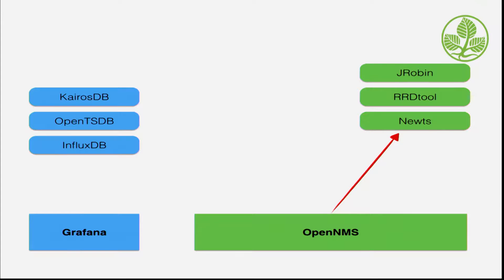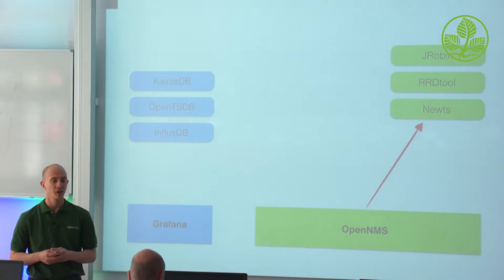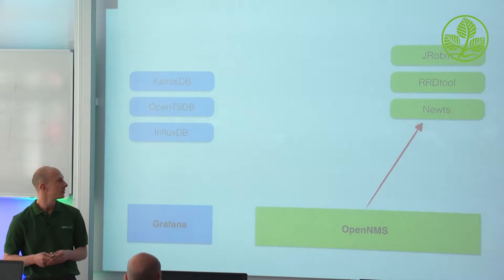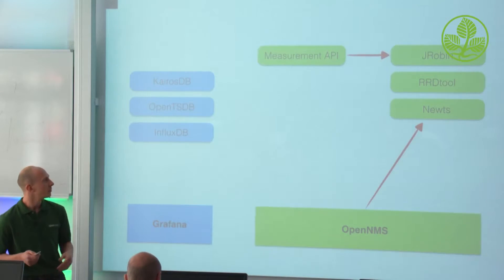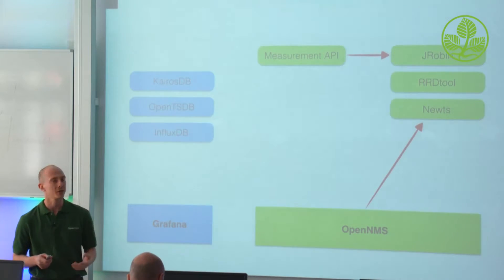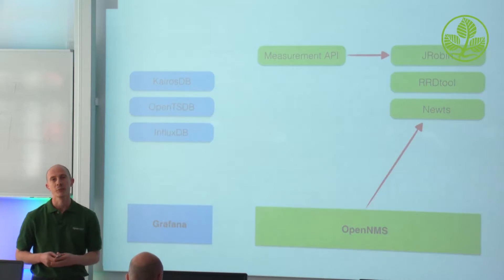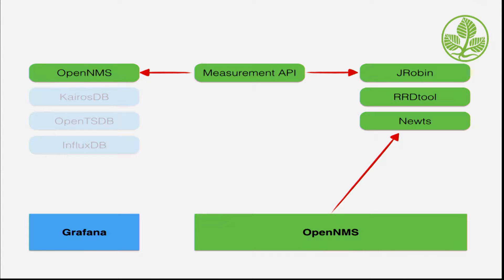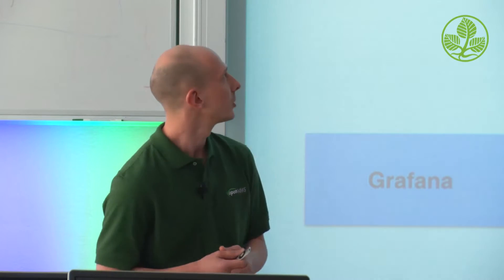On the other hand, we have OpenMS which is exactly the machine that collects all these metrics, and we can store these collected metrics in different time series databases like JRobin, RRDtool, and now Newts with version 17. The idea was: why not have a generic API? That is the key — the OpenMS platform providing a measurement API which is not dependent on the underlying time series data technology. It would be really nice to use this dashboard technology for measurements collected from OpenMS.